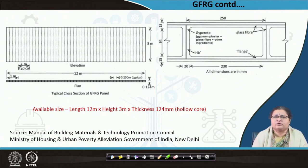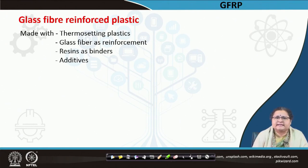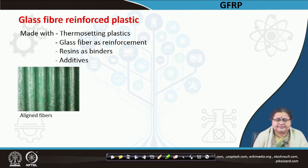We will discuss it more when we go into prefabricated items. The other is glass fiber reinforced plastic — GFRP — which is made with thermosetting plastic. Glass fiber serves as the reinforcement, using glass fiber rovings. Resins are the binders, and you can also have additives and coloring agents. In the image you can see the glass fibers are aligned in one particular direction.